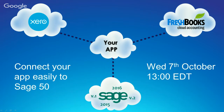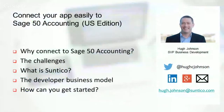Hello and welcome to this hangout on air from Suntico. Today we're addressing developers of business software who would like to connect their application to modern accounting software, and today we're specifically talking about how you can connect your app easily to Sage 50, specifically the Sage 50 US edition. My name is Hugh Johnson, I'm head of business development at Suntico. If you enjoy today's hangout, please get in touch or share it via your social networks, or contact me at Hugh.Johnson@Suntico.com.